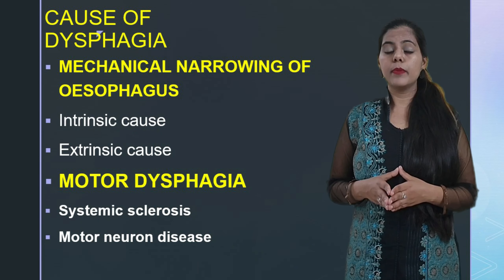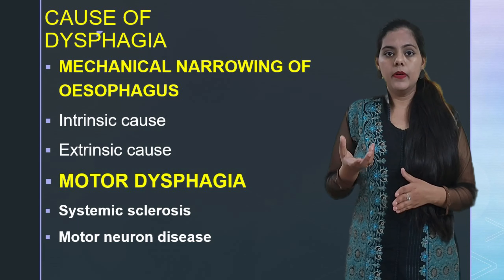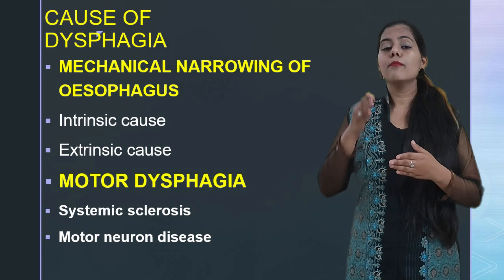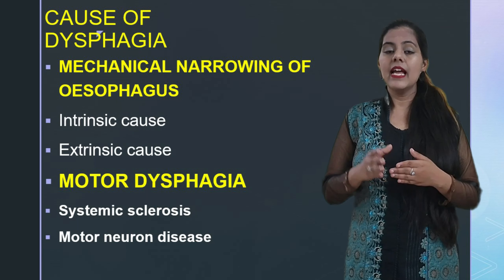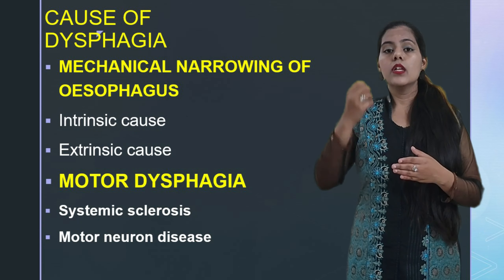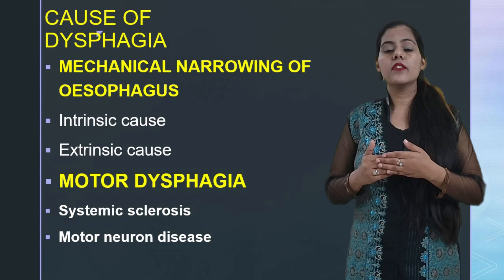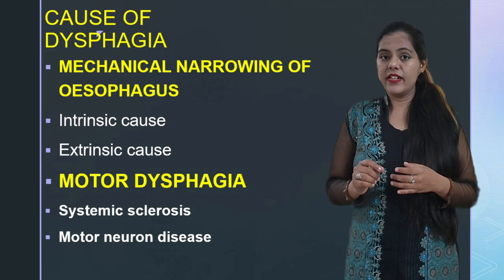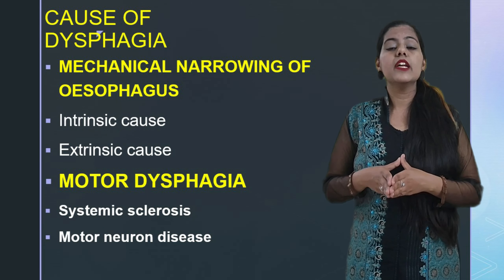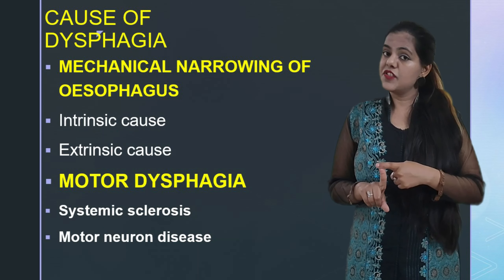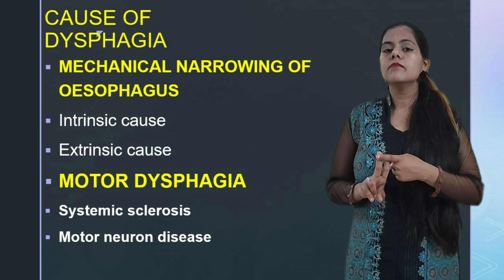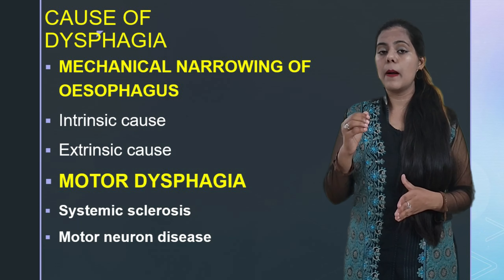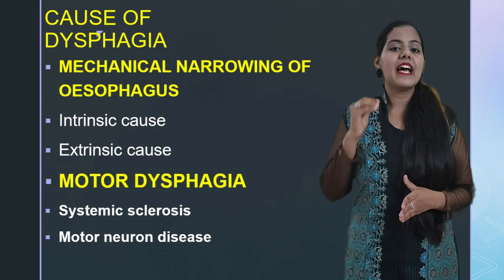Intrinsic factors also include Plummer-Vinson syndrome, pharyngeal web, or malignant tumor of the oesophagus. Extrinsic causes are causes present outside the oesophagus that compress it. For example, enlargement of the thyroid gland which might compress the oesophagus, left atrial enlargement as seen in mitral stenosis, aneurysm, retropharyngeal abscess or mass, and hiatus hernia — these are the extrinsic causes under mechanical narrowing of the oesophagus.